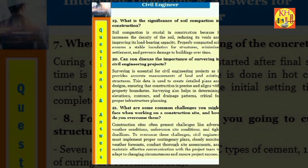Question 21: What are some common challenges you might face when working on a construction site and how do you overcome them? Construction sites often present challenges like adverse weather conditions, unforeseen site conditions, and tight deadlines. To overcome these challenges, civil engineers must implement proper contingency plans, closely monitor weather forecasts, conduct thorough site assessments, and maintain effective communication with the project team to adapt to changing circumstances and ensure project success.